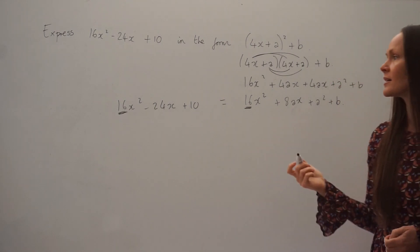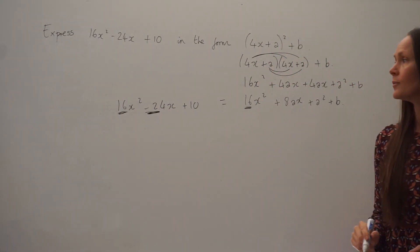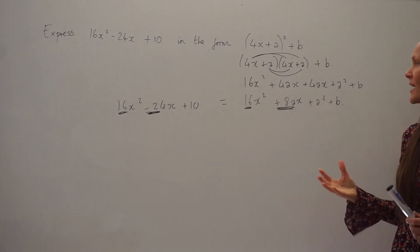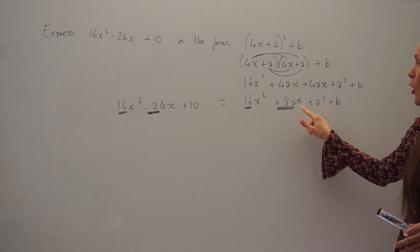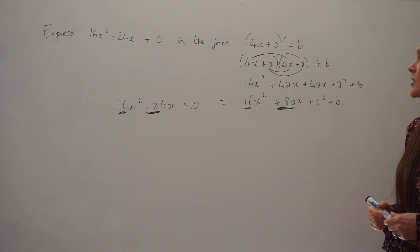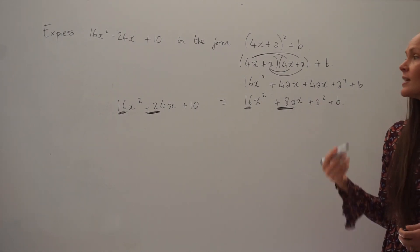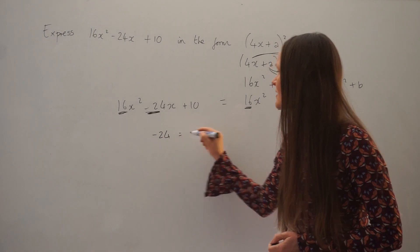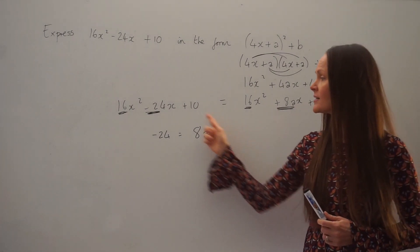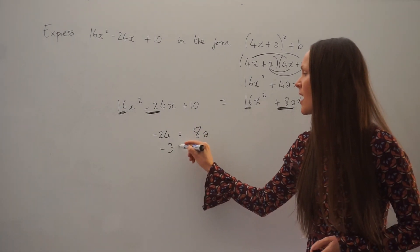Now let's look at the coefficient of x — the number that's being multiplied with x. On the left-hand side it's negative 24. On the right-hand side it's 8a, positive 8a — that's the only thing being multiplied by x. So these have to equal each other. Let's form an equation: negative 24 must equal 8a. Now we have a simple equation we can solve to work out the value of a. If I divide by 8 on both sides, I get negative 3.